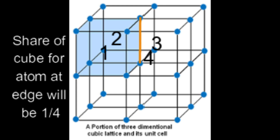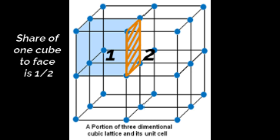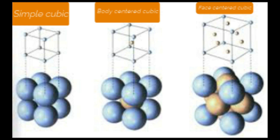Now, pay attention to the face. A face of the cube can be shared by 1 more cube, because on one plane surface we can arrange maximum 1 more cube. So that face is shared amongst 2 cubes. If any atom is present on the face of the cube, it has a contribution from 2 cubes, so half a portion of the atom will belong to 1 cube. Cubic arrangements of crystals are divided into 3 parts: first, simple cubic arrangement.